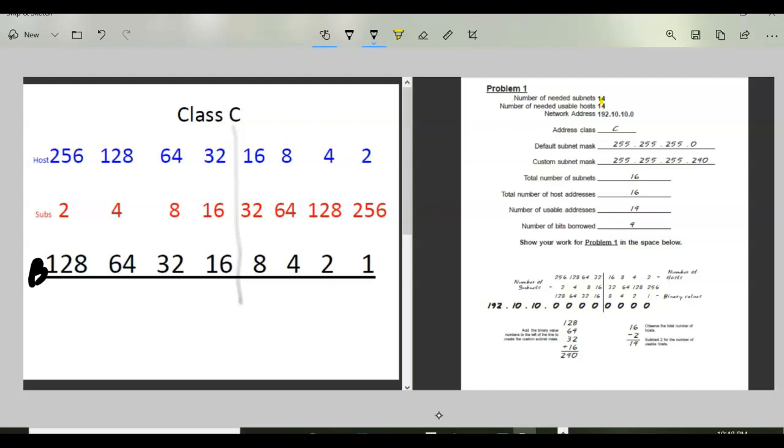And so these two addresses, the subnet number or the network address and the broadcast address, cannot be assigned to any device in a network. So I take my 16 and if I just go ahead and I subtract two that leaves me with 14 left. So I have a total of 14.